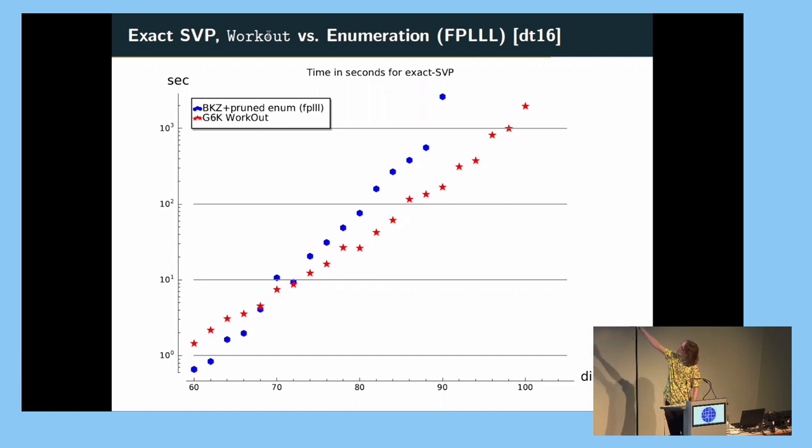A Jessica workout in the red stars, a workout is obviously a sequence of ever more strenuous pumps. And this is our thing we expect to solve exact SVP. And the blue dots are BKZ with pruned enumeration in the FPLLL library, which is I think the best publicly implemented enumeration library. And we can see that around dimension 70, these implementations cross. So that's less than 10 seconds, and certainly in much lower dimensions than we're interested in in cryptographic purposes.